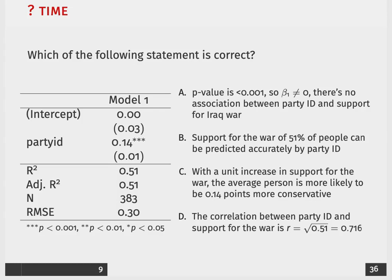Moving on to C, the correct way to say this would be a unit increase in party ID is associated with a 0.14 increase in support for the war. So it's worded backwardly.